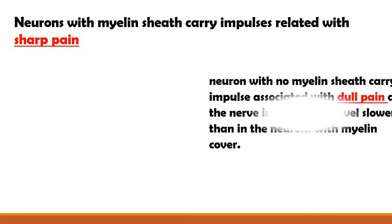While if the neuron has no myelin sheaths, the sodium and potassium ions have to diffuse across the whole length of the axon body, and this makes the speed of the action potential slower. So we can say it again that neurons with myelin sheaths carry impulses related with sharp pain because it is transported faster, while neurons with no myelin sheaths carry impulses associated with dull pain because it is transferred much more slowly than the neuron with myelin cover.